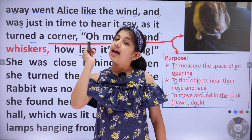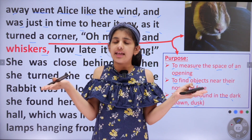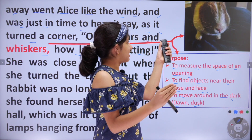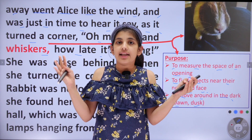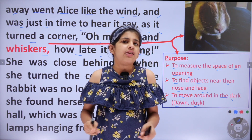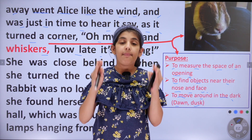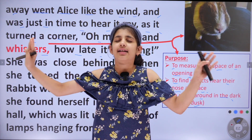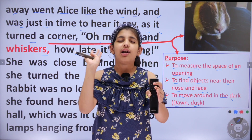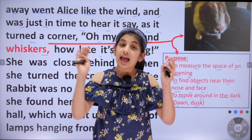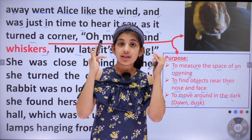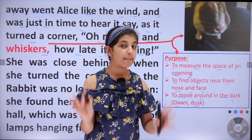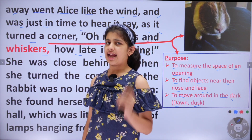Similarly, a rabbit also — when it's dark, it will not be able to see, but it will be able to feel through its whiskers, just like a blind person. A blind person will not be able to see, but will feel that something is in front and not go there. Similarly, a rabbit through its whiskers will be able to feel in the dark, especially at dawn and dusk. A man has his moustache.